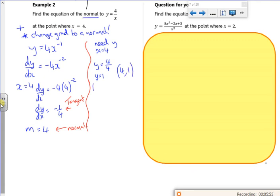So I'm going to use 4 comma 1. And m is 4. There's a lot of 4s here isn't there? So I've got y minus 1 is 4 lots of x minus 4. Job done.